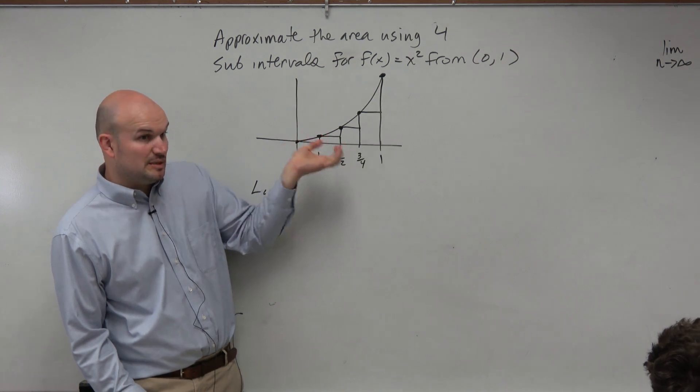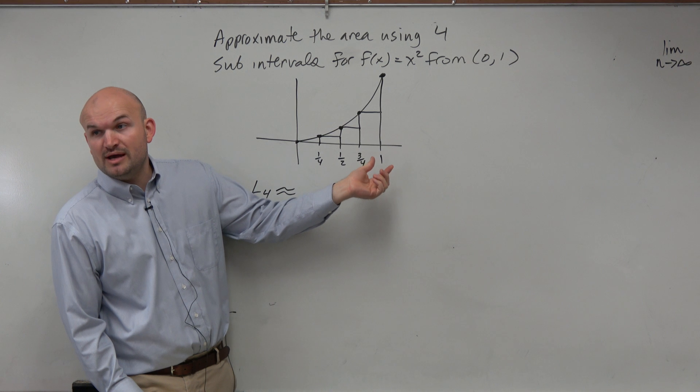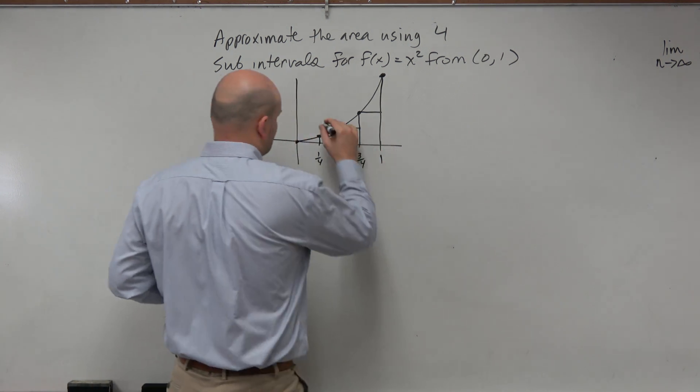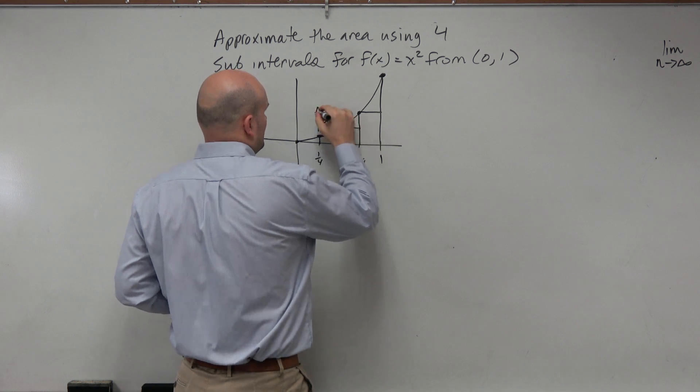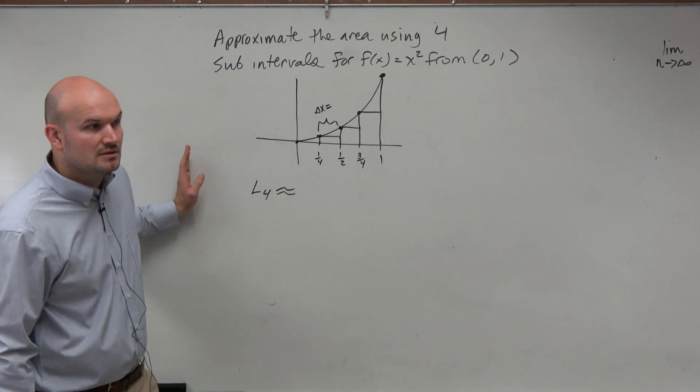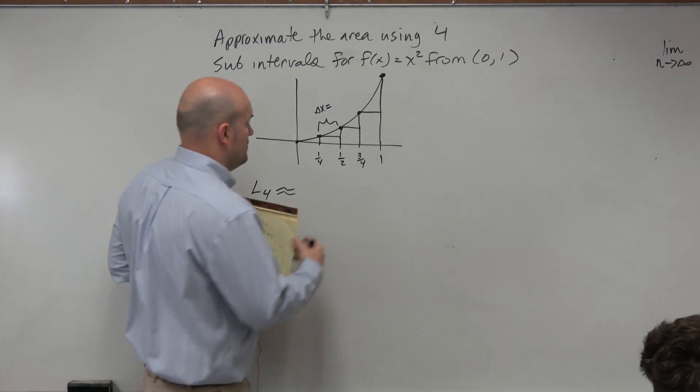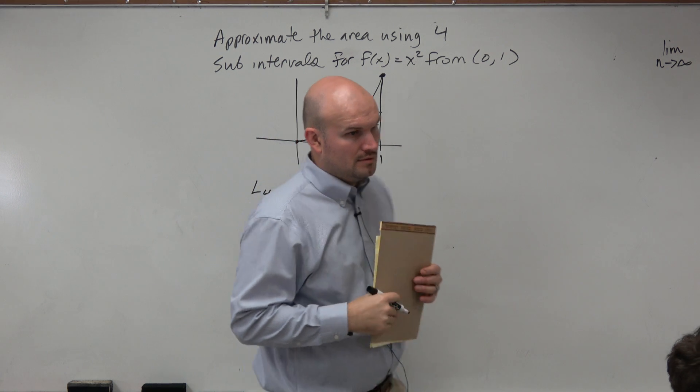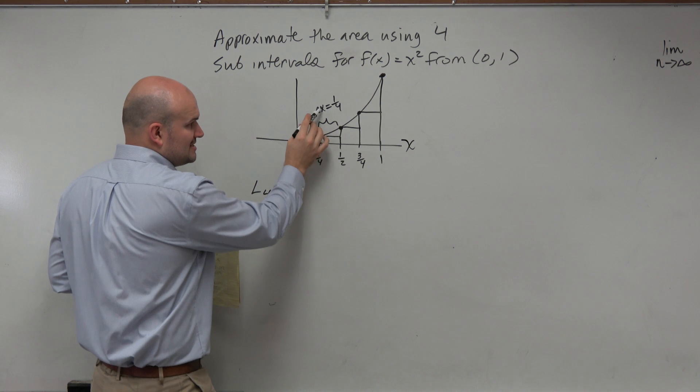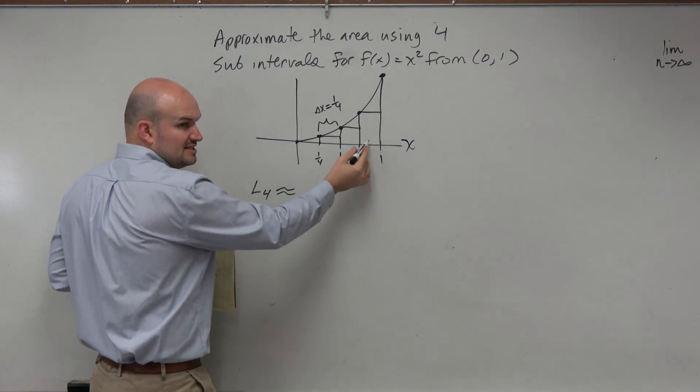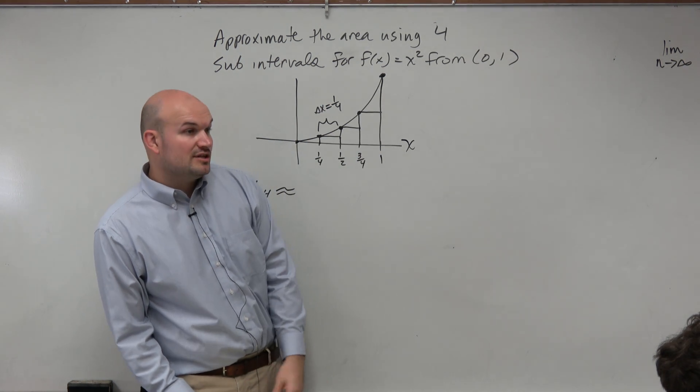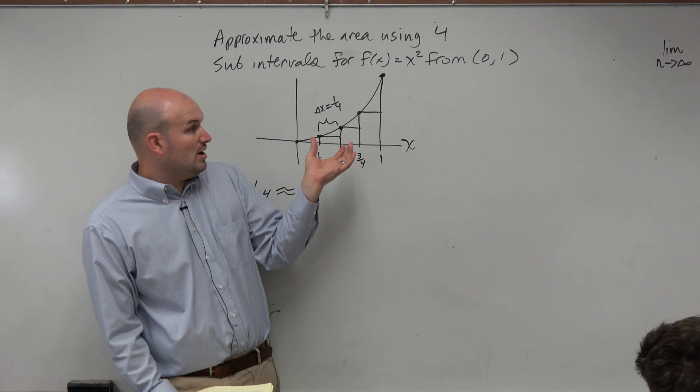Now, for each of these rectangles, we need to be able to figure out the height, right? And we need to be able to figure out the width. Now, the nice thing is the width is uniform, isn't it? Like this delta x is equal to what is the distance between each of these, for each of these rectangles? One-fourth. Why would you say that delta x? I think this is like the x-coordinate, so it's basically just the change in between each of these x intervals. Yeah, change, delta, delta x. OK, so that's the width of all these rectangles is one-fourth.